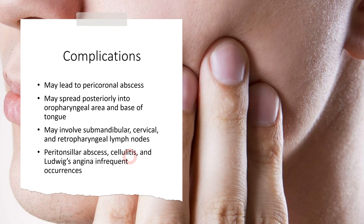More serious complications include peritonsillar abscess and cellulitis. Very rarely, there is also the possibility of Ludwig's Angina, which involves the submental, submandibular, and sublingual spaces simultaneously — a serious complication because it hinders the patient's respiratory system. These complications highlight why pericoronitis must be treated as soon as possible when a patient presents in clinical practice.